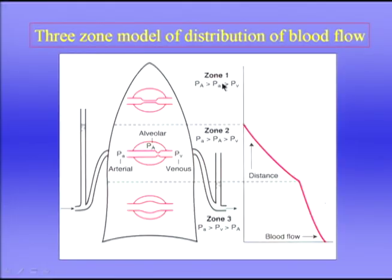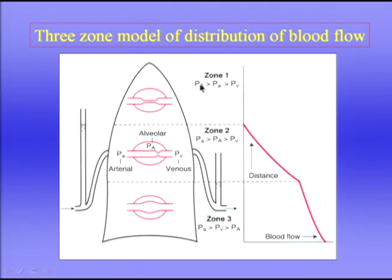Zone 1 doesn't occur under normal conditions — pulmonary arterial pressure is just sufficient to raise blood to the top of the lung. However, it can occur if arterial pressure is reduced by hemorrhage, or if alveolar pressure is raised by positive pressure ventilation. For example, a trauma patient in the operating room on positive pressure ventilation with reduced blood pressure may develop Zone 1, which would be at the anterior part of the lung in the supine position.